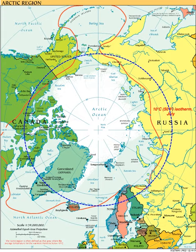The Arctic region is defined by environmental limits where the average temperature for the warmest month is below 10 degrees Celsius. The northernmost tree line roughly follows the isotherm at the boundary of this region. The area has tundra and polar vegetation.